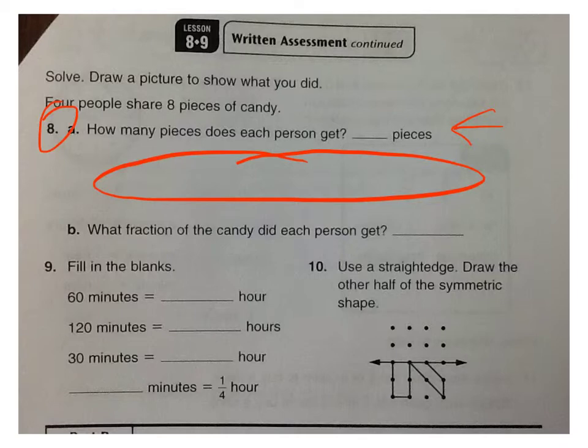Part B. What fraction of the candy did each person get? So write it as a fraction now. Remember there's 4 people sharing 8 pieces of candy. Use this picture to help you figure out that fraction.